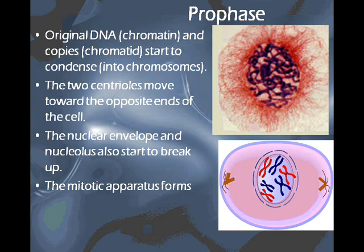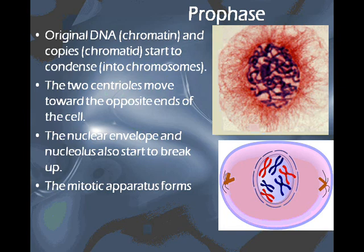During prophase, the original DNA — the chromatin — which is already copied as the chromatid, starts to condense into chromosomes. So throughout interphase it's in the loose chromatin form, and then in prophase it condenses into chromosomes. At this stage, we also see the centrioles move toward the opposite poles of the cell — those are the churro-looking bits right there. The nuclear envelope starts to break down, which is why it's shown as a dotted line in the illustration, and the mitotic apparatus, or spindle fibers, forms.